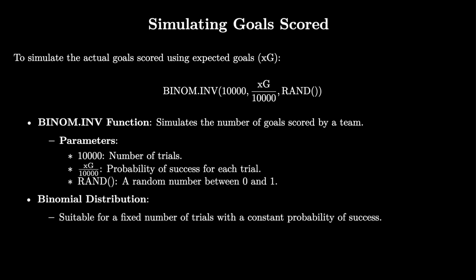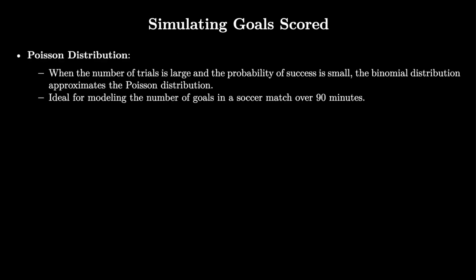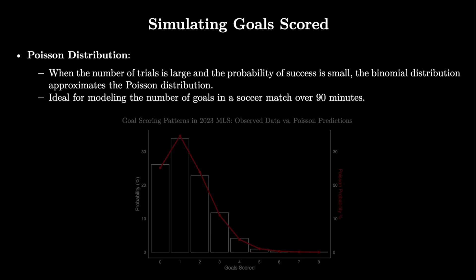To simulate the actual goals scored using these expected goals values, we need to use the binomial inverse function in Excel. The function simulates the number of goals scored by a team, treating each potential goal as an independent trial with a small probability. The binomial inverse function models a binomial distribution, suitable for a situation where you have a fixed number of trials each with a constant probability of success. When the number of trials — in this case 10,000 — becomes very large and the probability of success (XG divided by 10,000) becomes very small, the binomial distribution approximates the Poisson distribution, which is ideal for modelling goals in a soccer match as it describes the probability of a given number of events in a fixed interval, i.e., goals scored in 90 minutes.